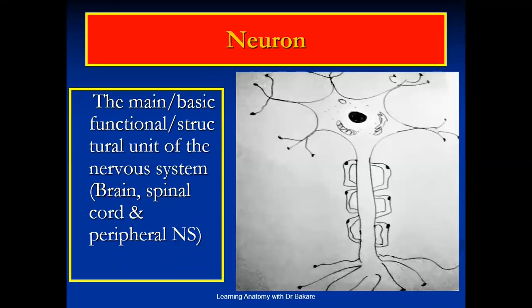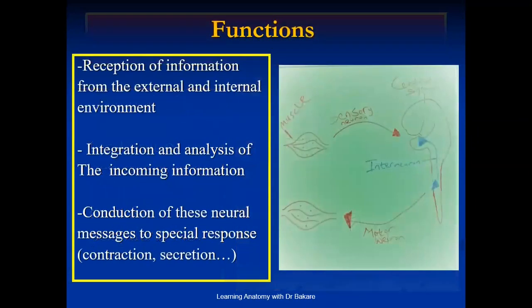The neuron is the microscopic unit of the nervous system. This means that it is the smallest unit that cannot be seen with the naked eye except with the use of a microscope. It is the basic structural and functional unit of the nervous system, which includes the brain, the spinal cord, and the peripheral nervous system.